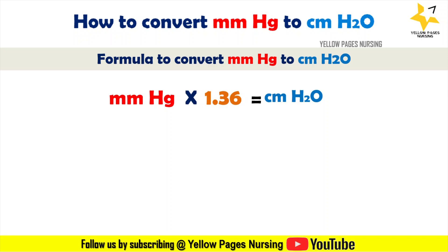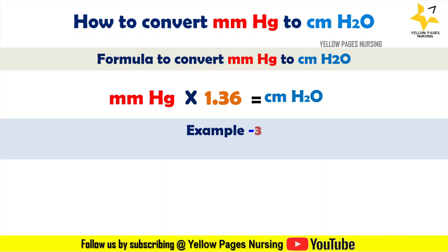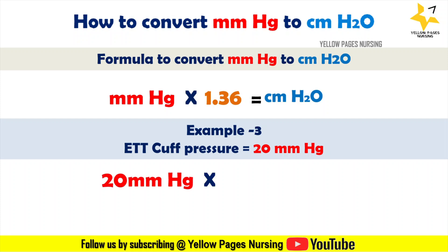First example: endotracheal tube cuff pressure equals 20 mmHg. So 20 multiplied by 1.36 gives the answer 27.2. Therefore, the endotracheal tube cuff pressure of 20 mmHg equals 27 centimeter H2O.